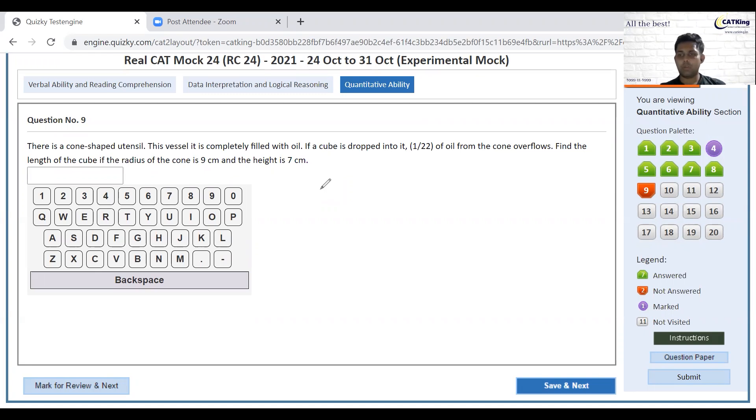Overflows so volume equals 122 of the cone which is 1 by 3 pi r square and h. Side of the cube equals 3.